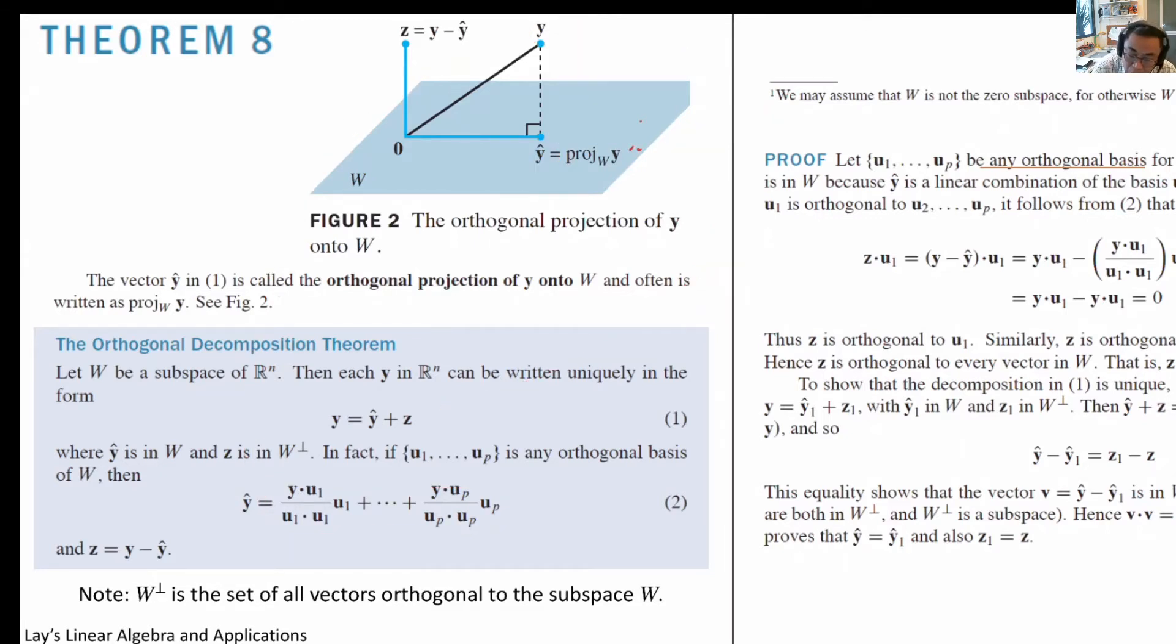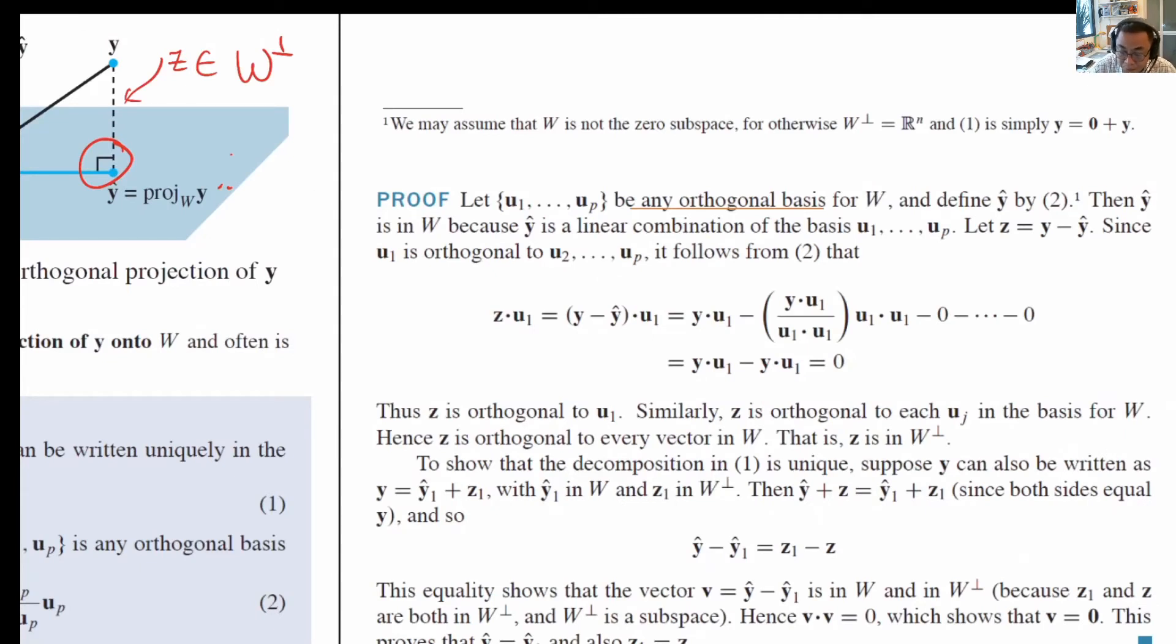We will now show that this error vector z is orthogonal to y hat. In other words, z lives in the subspace of w orthogonal, the orthogonal space of w. Let us prove this statement.